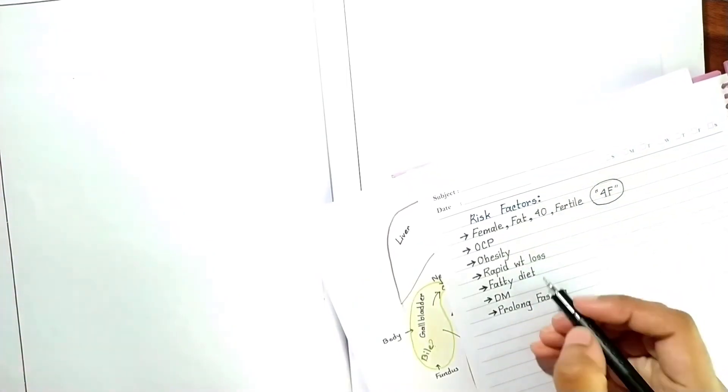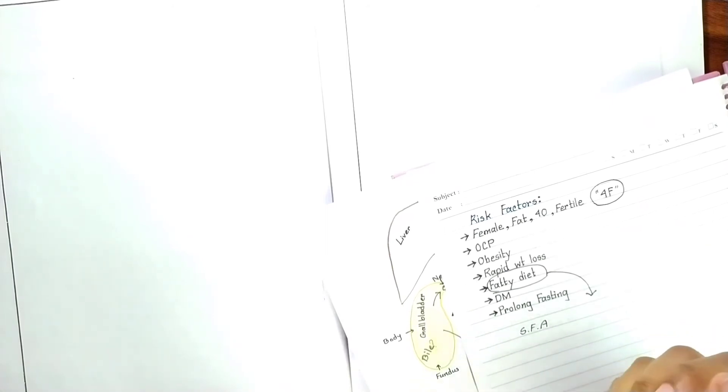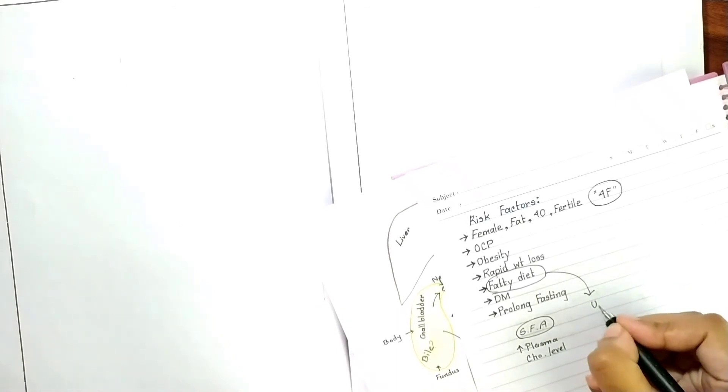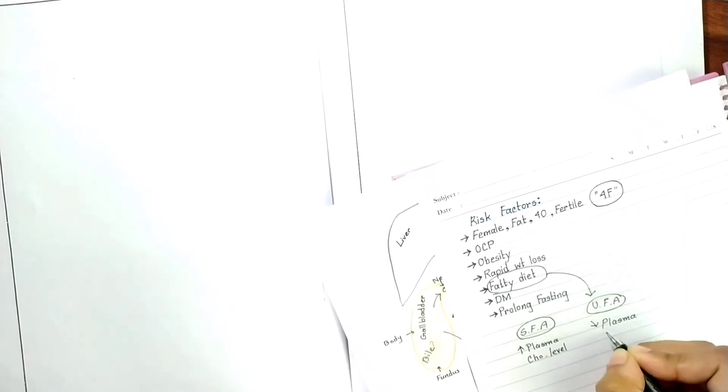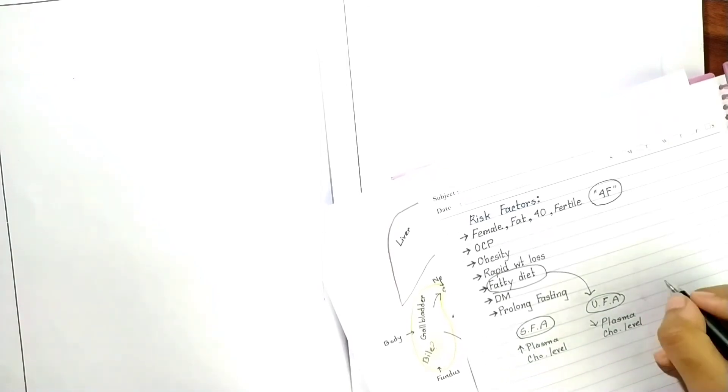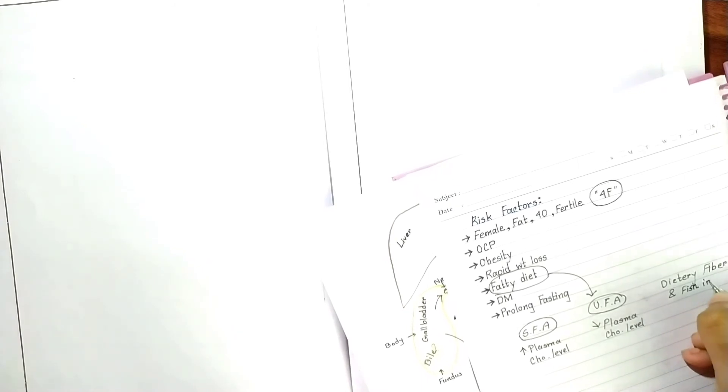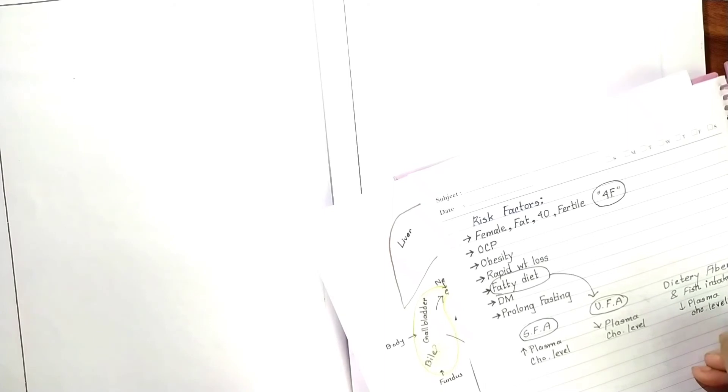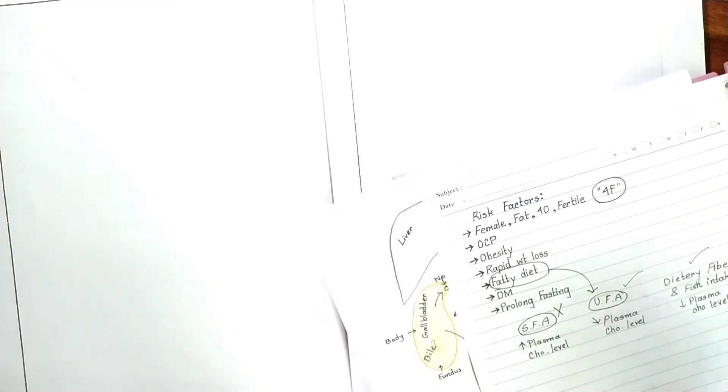Regarding fatty diet, there are two types of fatty acids: saturated fatty acid and unsaturated fatty acid. Fatty acids like animal fat, those saturated fatty acids, increase plasma cholesterol level. Unsaturated fatty acids like vegetable oil and fish oil decrease plasma cholesterol level. Dietary fiber and fish intake also decrease plasma cholesterol level. So patients associated with symptoms of gallstone formation should not take saturated fatty acids like animal fat and should take unsaturated fatty acids like vegetable oil, fish, dietary fiber, etc.